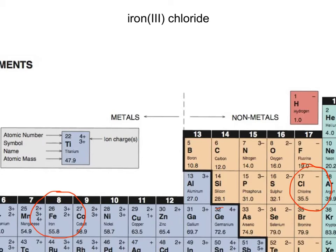So the first thing we're going to do is deal with the iron first. We're going to write down the symbol Fe. We notice the charges shown are 3+ and 2+, and we're going to decide which one to use in a second. For chlorine, here's the symbol Cl and there's the charge 1−, so we'll write that over here: Cl 1−.